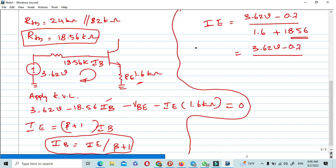So now 3.62 voltage minus 0.7 for the VBE, and then 1.6 kiloohms plus 18.56 over beta plus 1, which is 100 plus 1. Finally, if you reduce this equation, we may get IE equals 1.715 milliamperes.